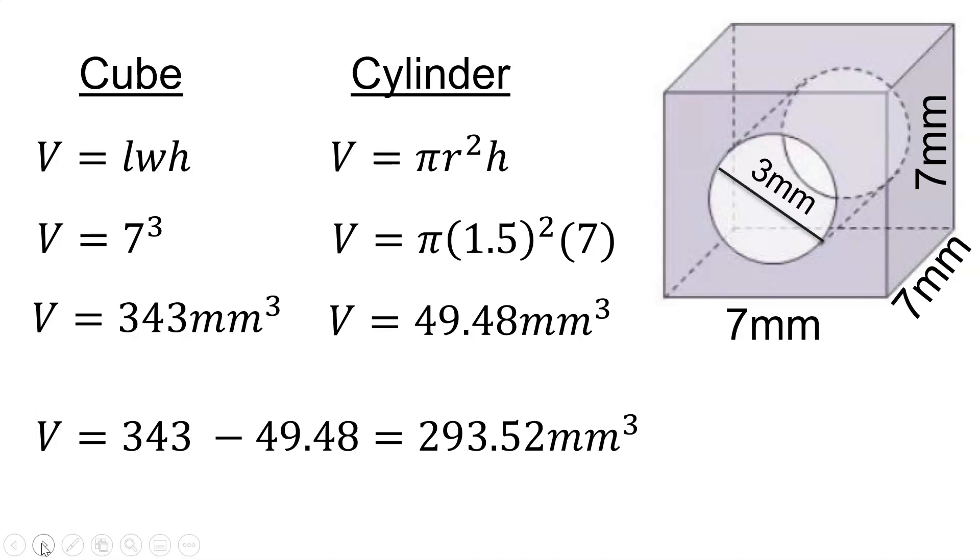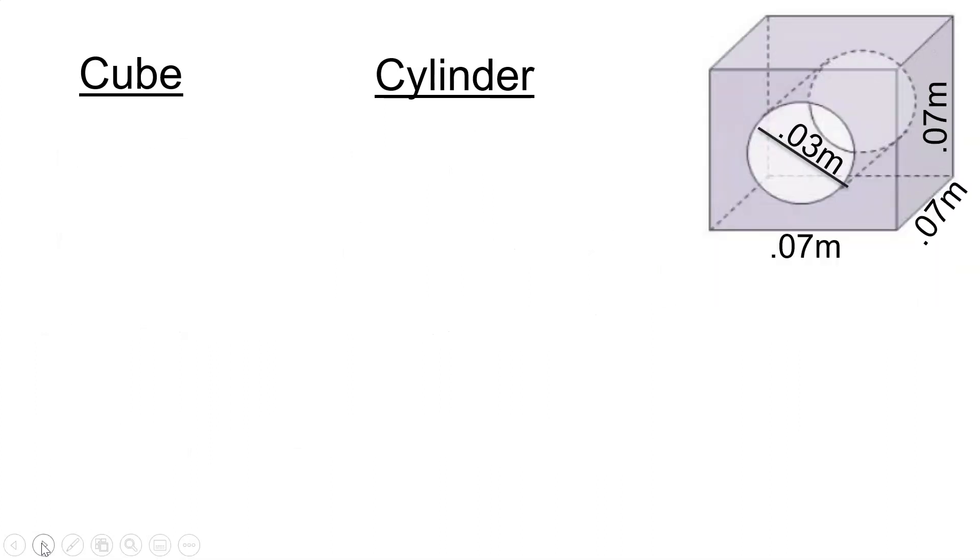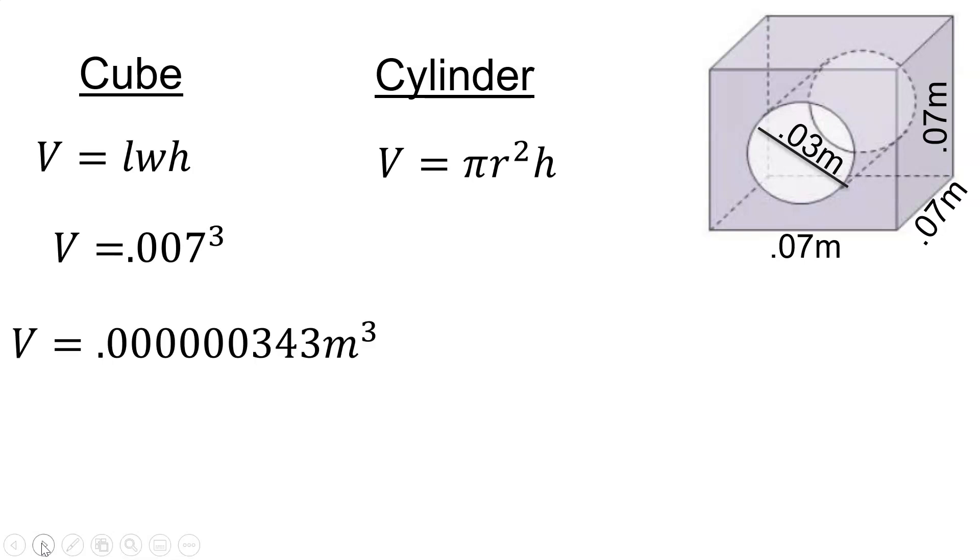To change millimeters to meters we divide by 1000. Do we do the same thing when converting from cubic millimeters to cubic meters? This time let's convert the units to meters before we find the volume. We'll use the same formulas and the same process.